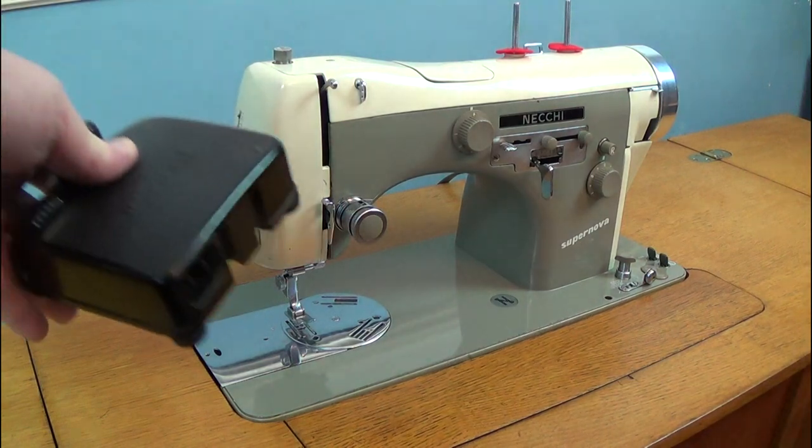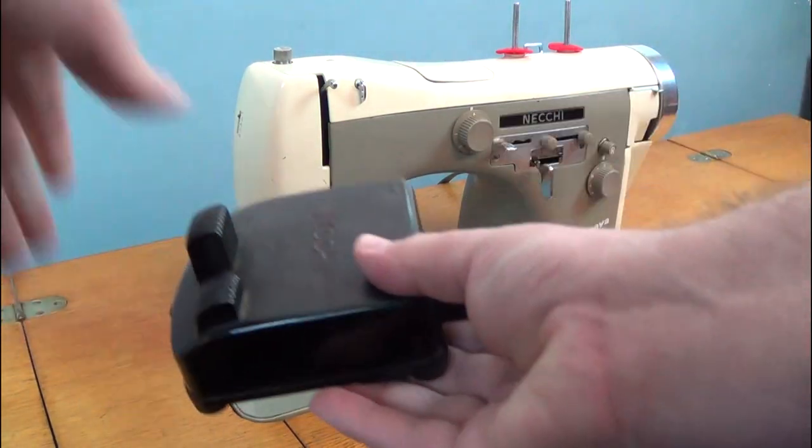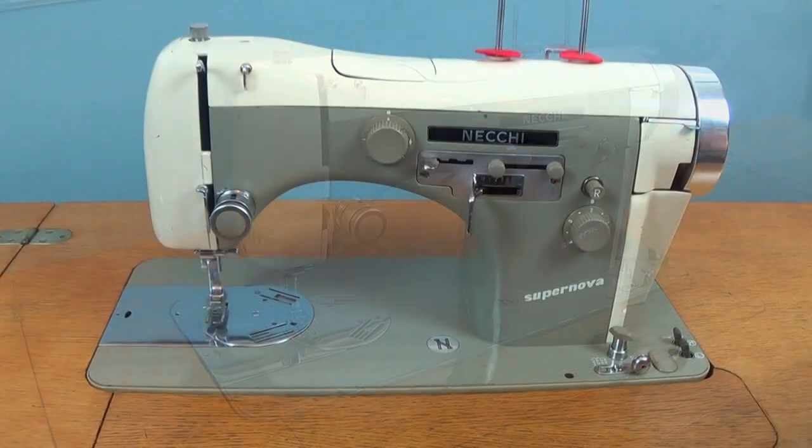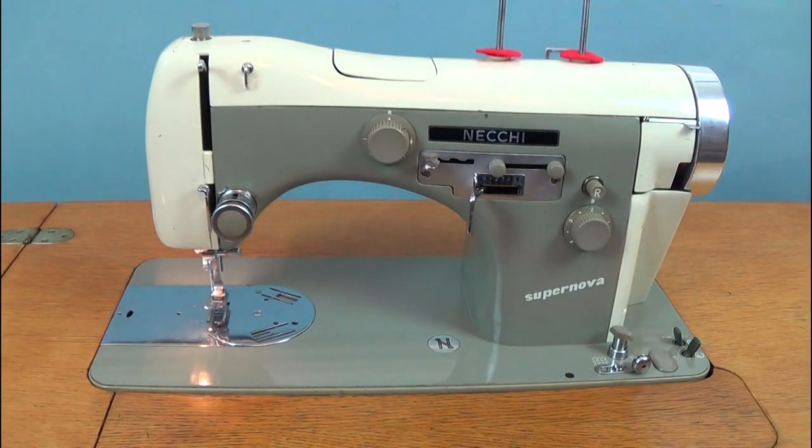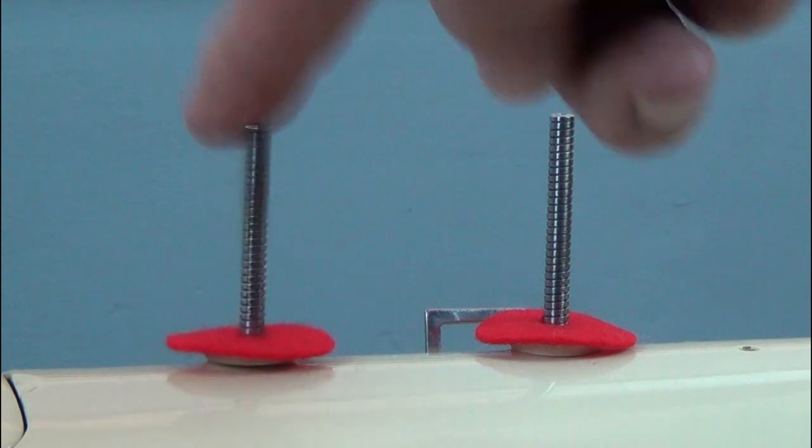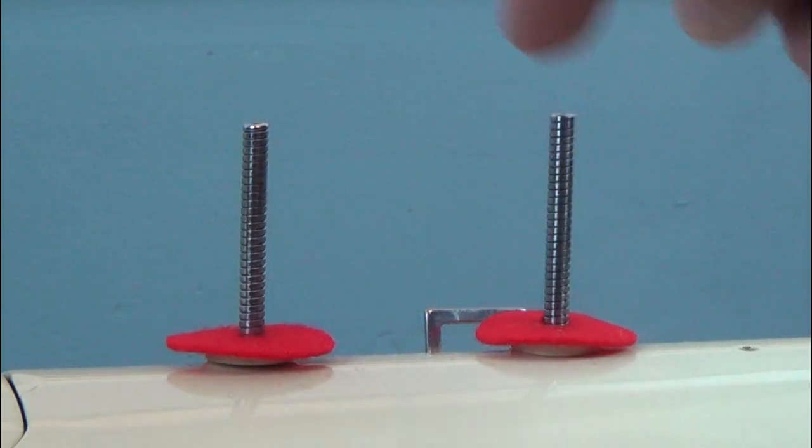The foot pedal is separate and plugs in, it can be stored in a drawer when not in use. The machine has a power switch, which also turns on the light. The spool pins are springs, so can't easily be damaged.